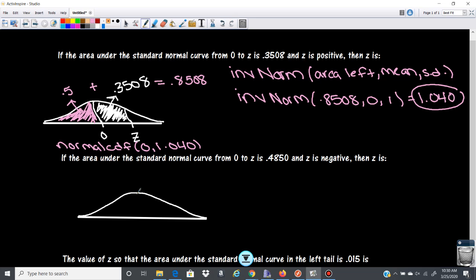All right, so 0 is here, z is on this side, and the area is 0.4850. Okay, so here's my visual. I am missing this little part here.